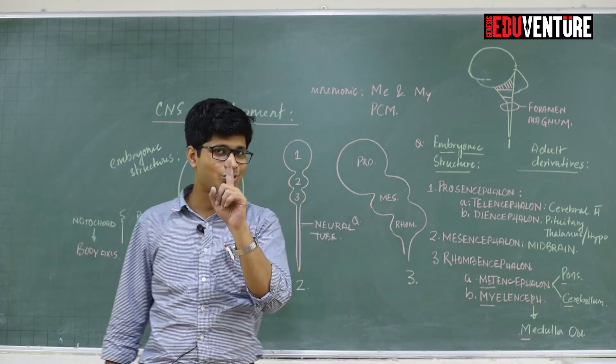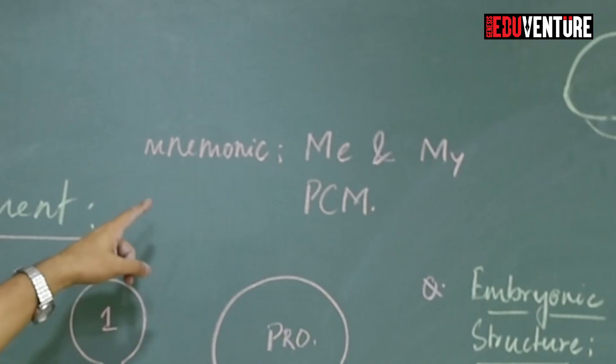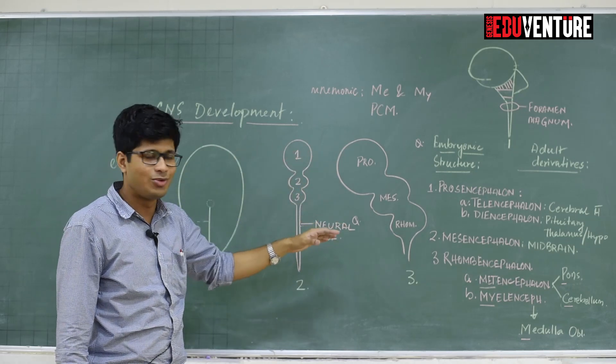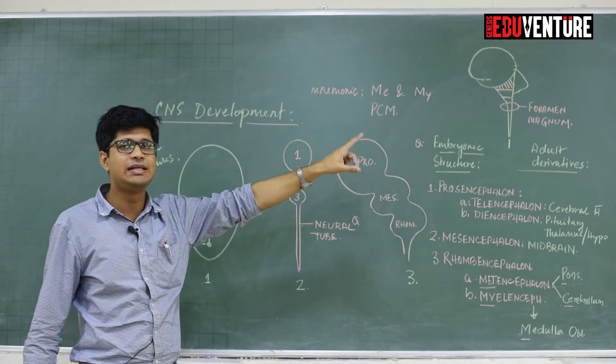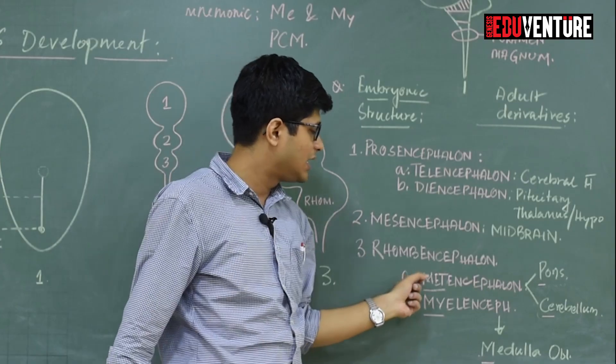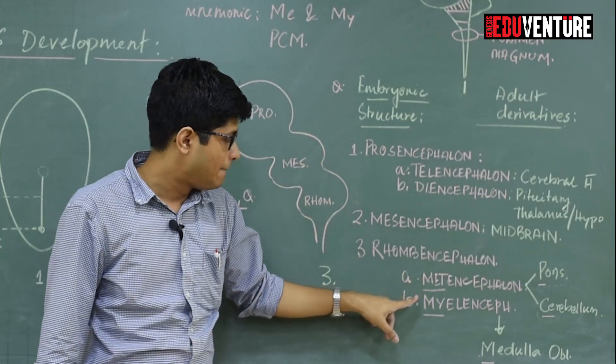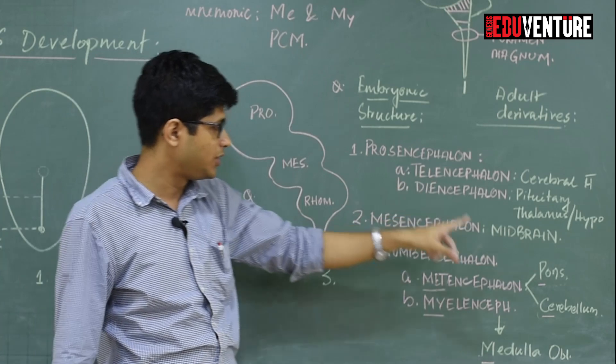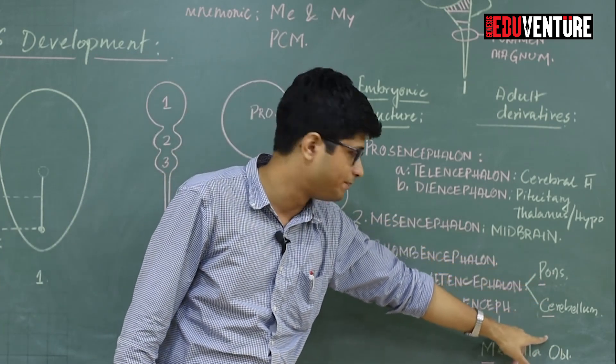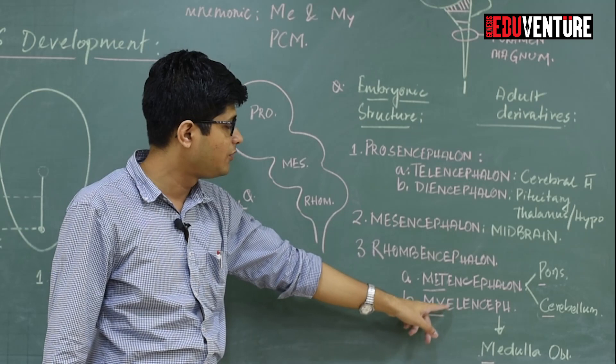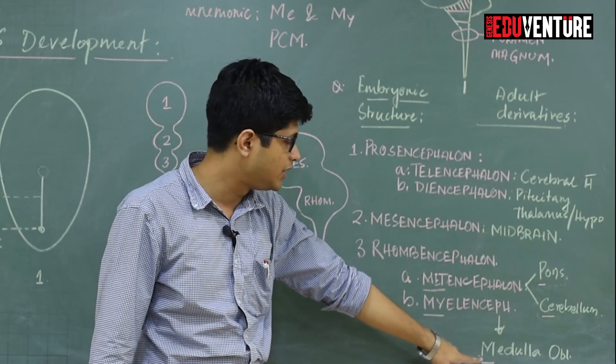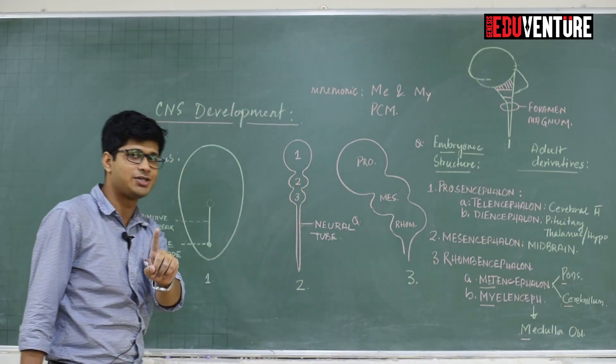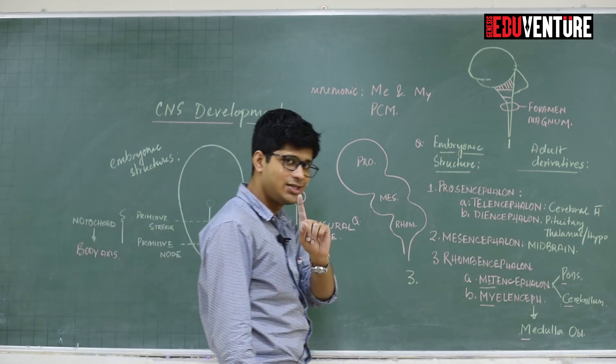I have something very interesting for you. This mnemonic says ME and MY PCM. ME stands for metencephalon, MY stands for myelencephalon. From ME you get two derivatives P and C. What is P and C? Pons and cerebellum. From MY you get myelencephalon, and what do you get? An adult derivative is M which is medulla oblongata. Now it gets easier, right? Making sense. CNS development is making sense. Yes, it's easy, very easy.